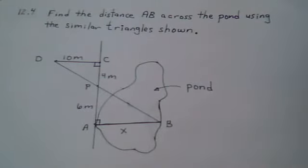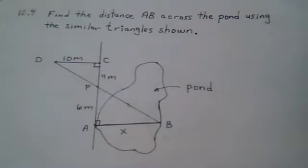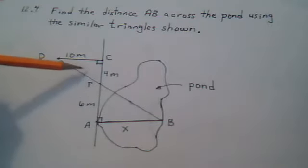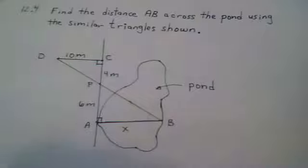Find the distance AB across the pond using the similar triangles shown. So these two triangles are supposed to be taken as similar. Similar implies same shape, not necessarily the same size.